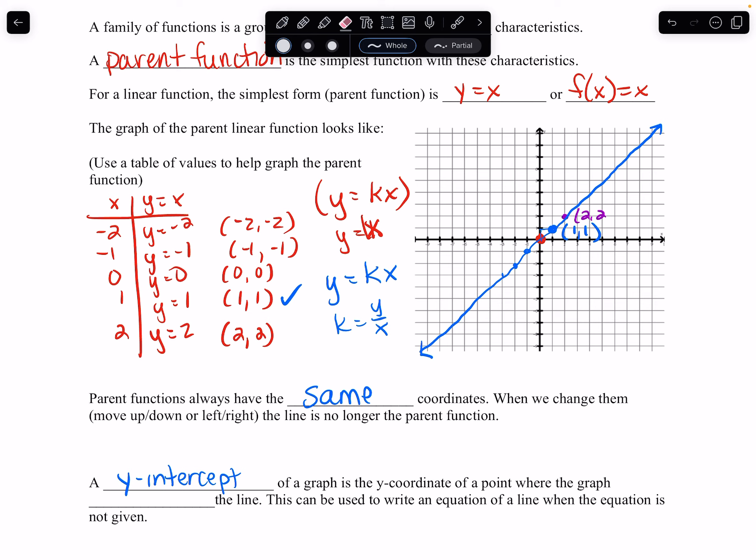But a y-intercept. Oh, I forgot this sentence. Parent functions have the same coordinates. When we change them, which means move them up or down or left or right, the line is no longer the parent function. It changes. So we're going to go over to what that is. That means if we move it up or down.